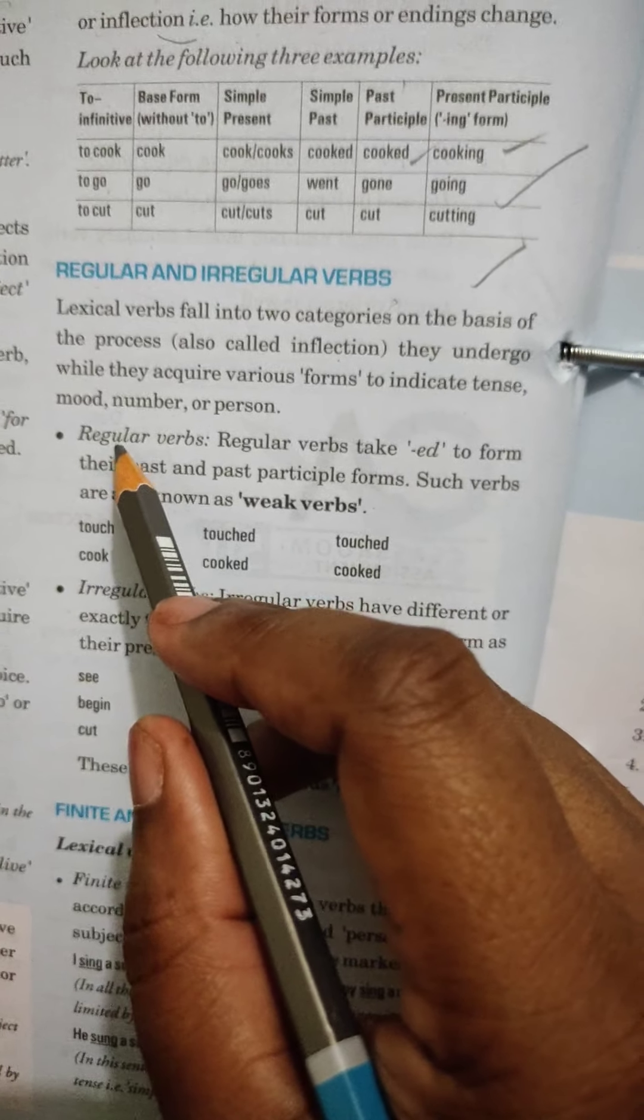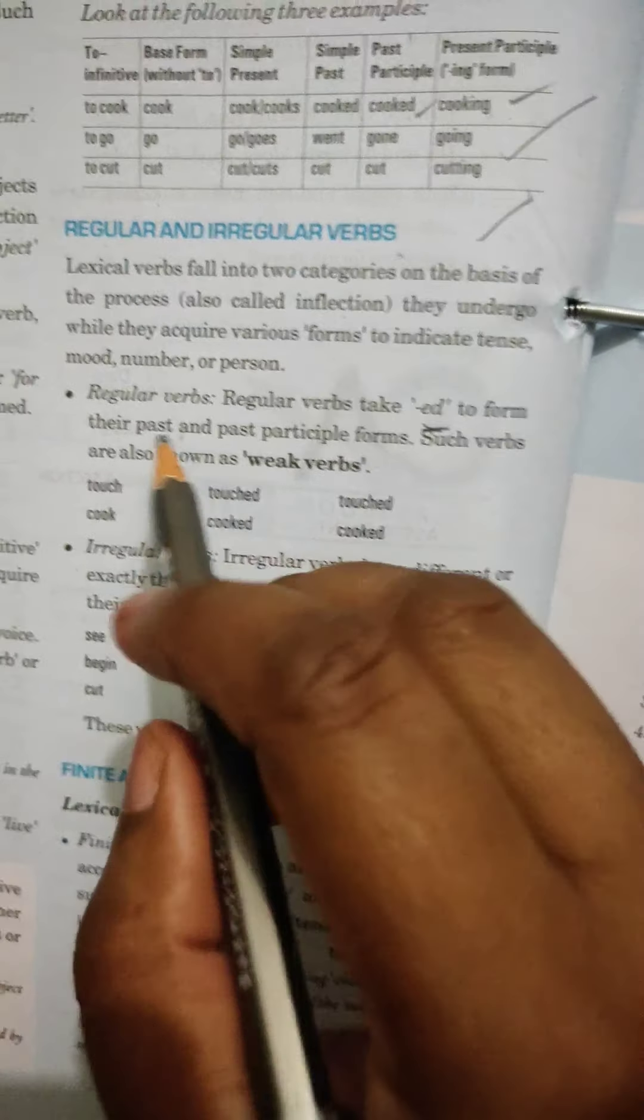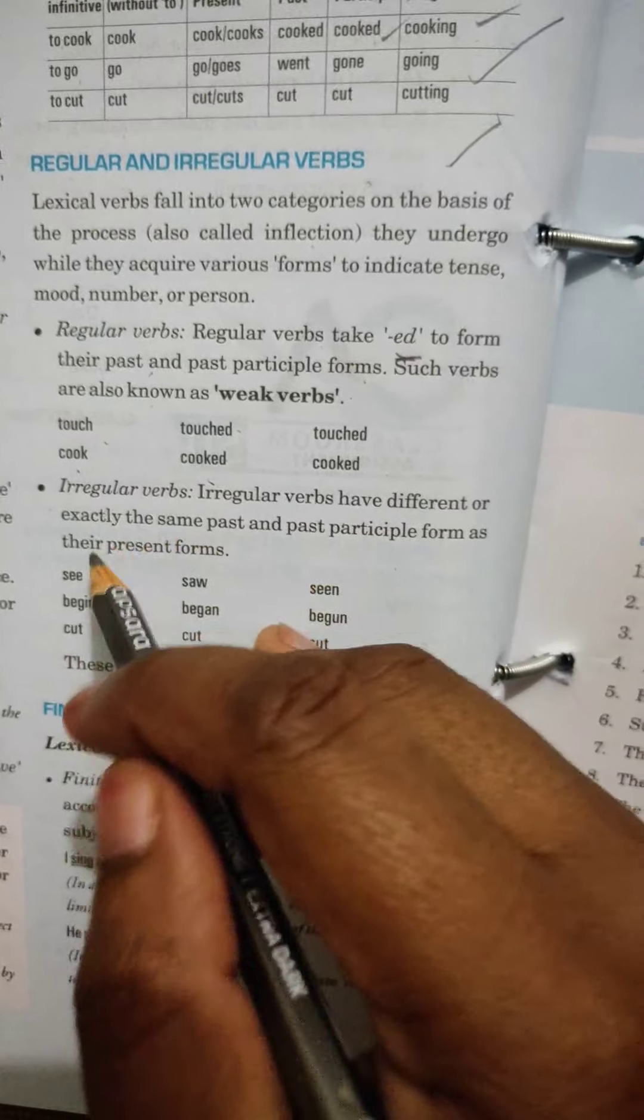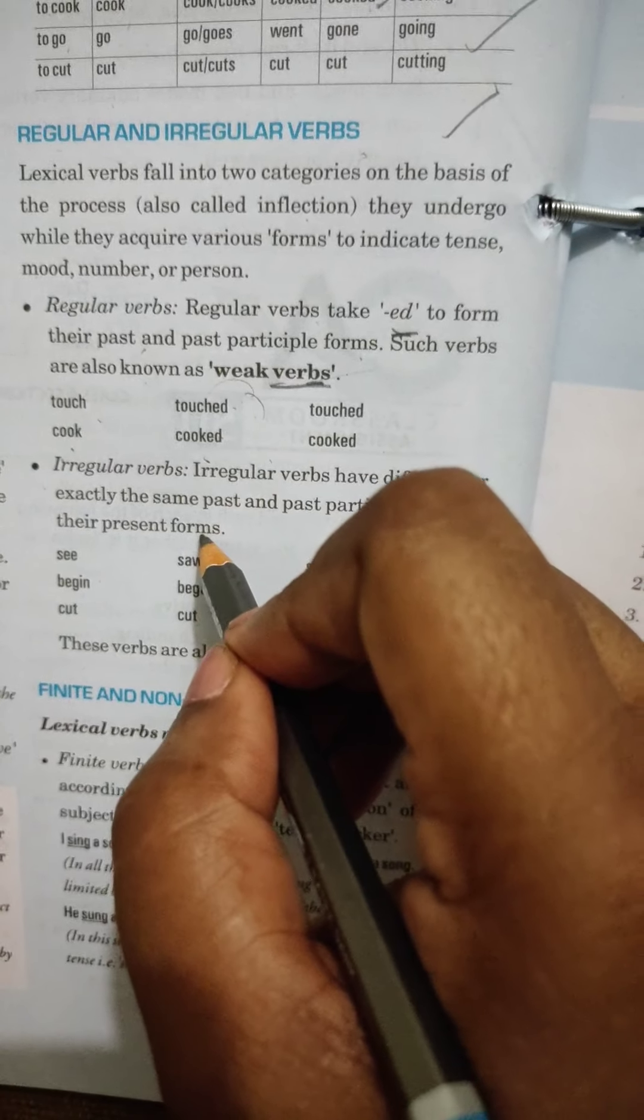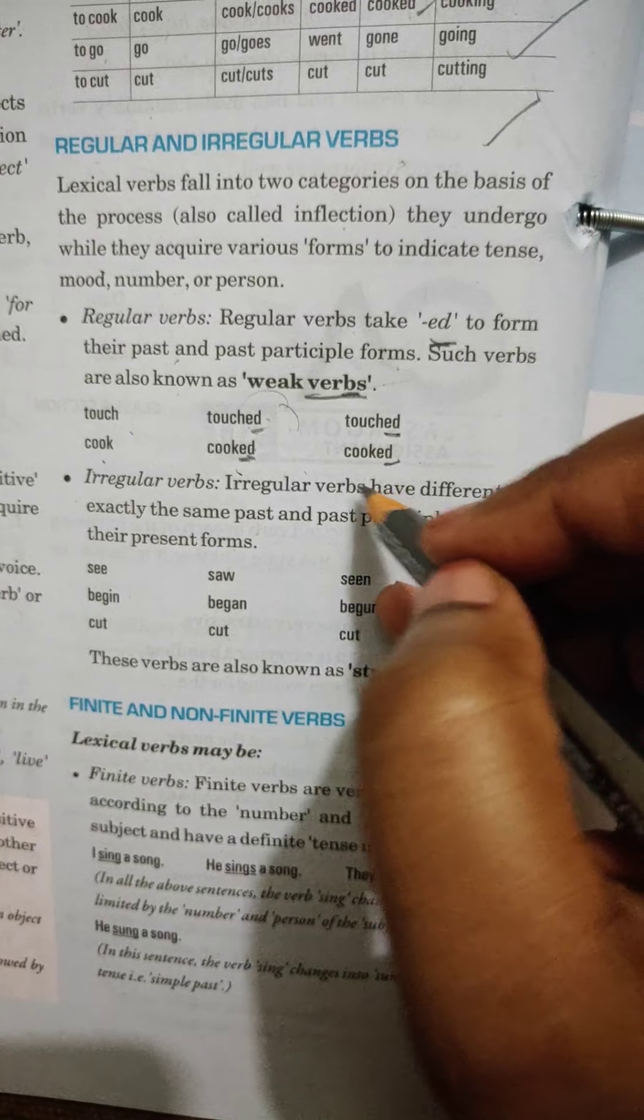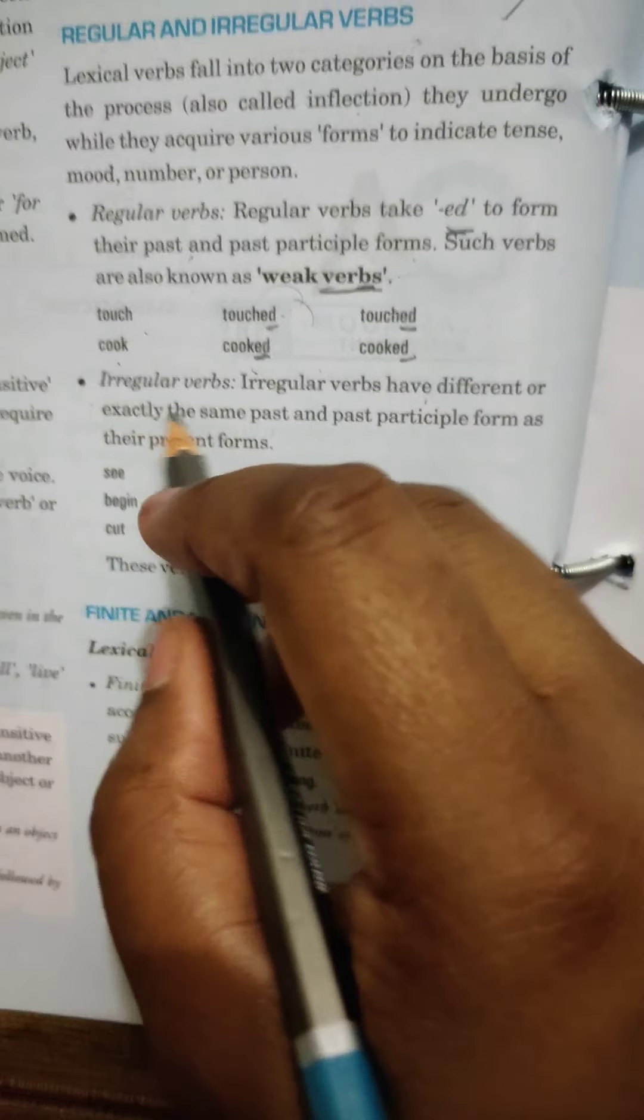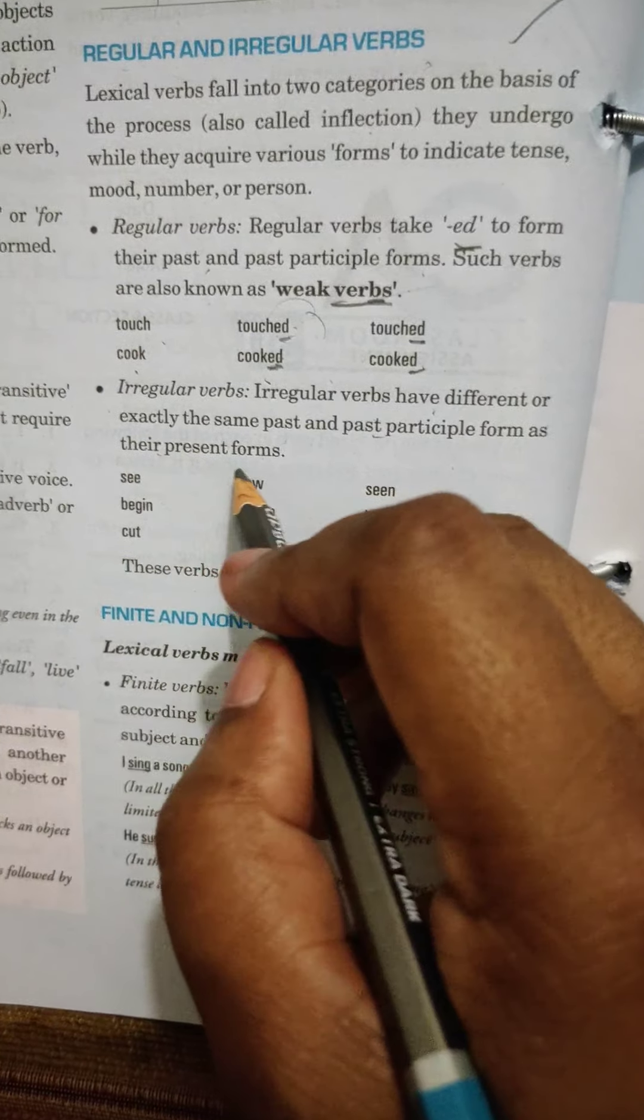Now, let us have a look. Regular verbs take ed to form their past and past participle forms. Verbs such as touch, touched, cook, cooked, ask, asked. So, like this, ed forms like such verbs are also known as weak verbs. These are known as weak verbs when you are only simply trying to put ed at the back of the word.